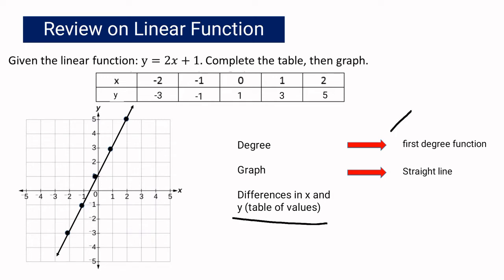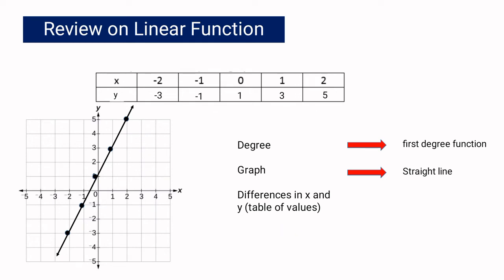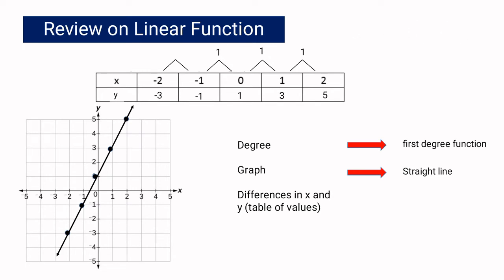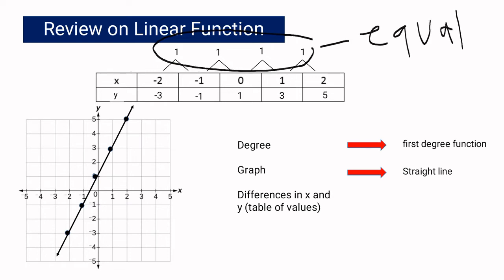Let us figure out the differences in x based on our table of values. We compute: 2 minus 1 is 1; 1 minus 0 is 1; 0 minus negative 1 is 1; and negative 1 minus negative 2 is also 1. So the differences in the values of x are all equal.